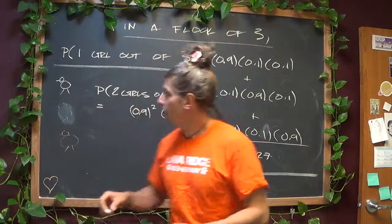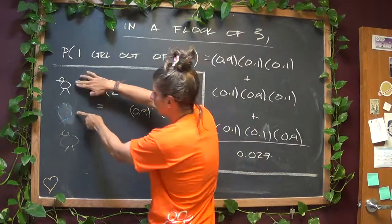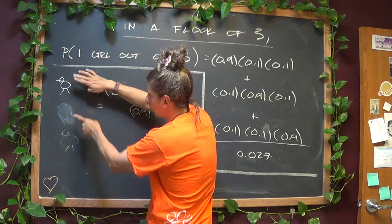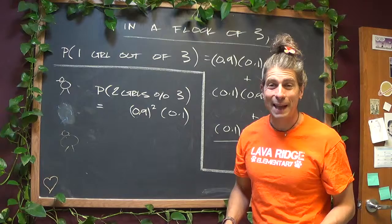Let's count over here. Where can the two girls be? It could be these two, or it could be these two, or it could be these two. There's only three ways for it to happen.